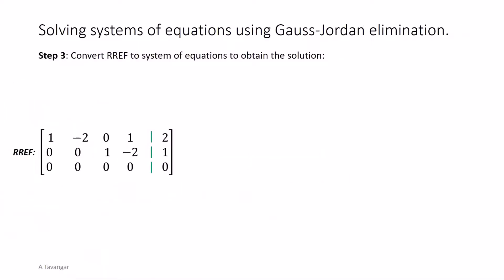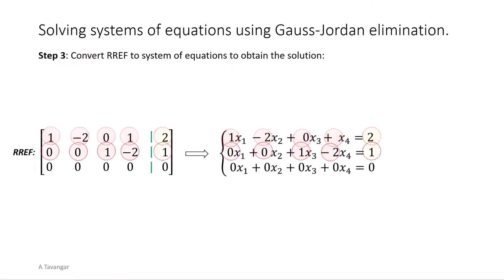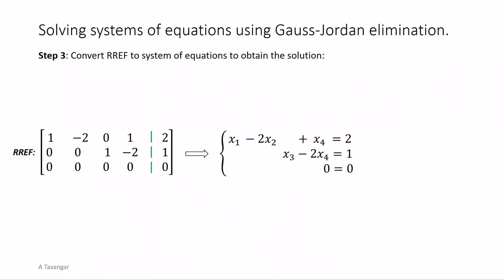Next we convert back the reduced row echelon form to the system of equations. Observe that the system corresponding to the reduced row echelon form has two equations in four variables. Since the number of equations is less than the variables, the solution will be parametric, meaning that there will be parameters in the solution and that the system has infinitely many solutions.